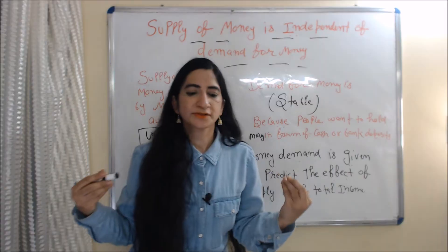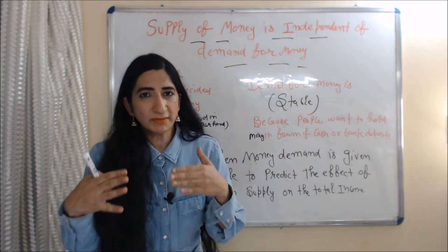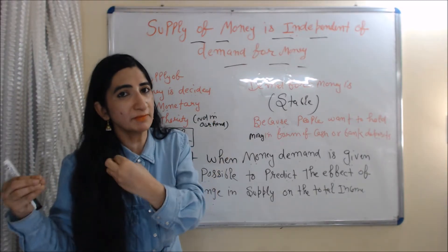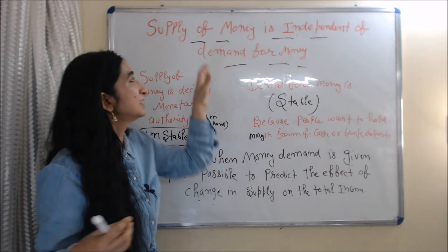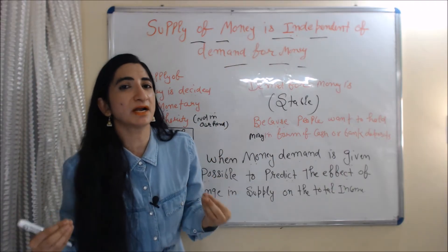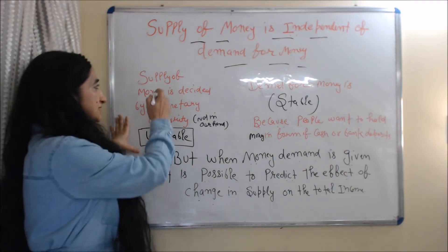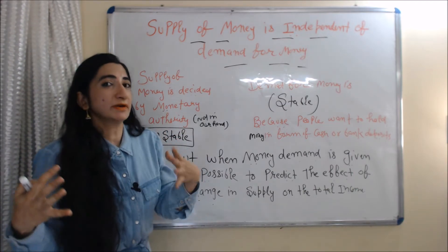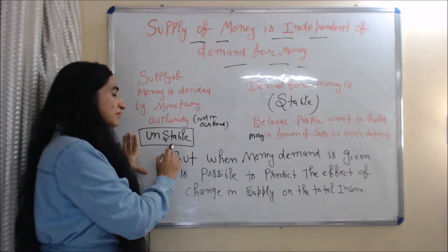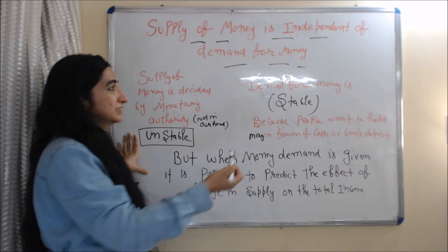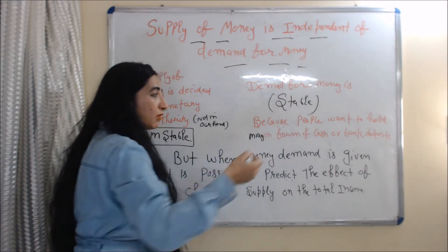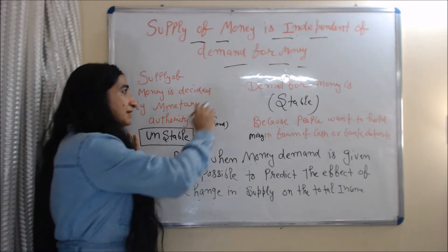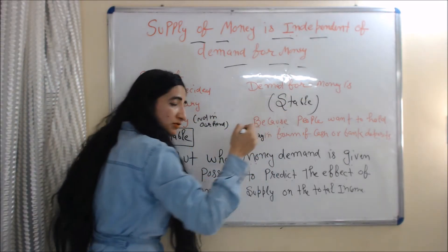According to Milton Friedman, supply of money is independent of demand for money because supply of money is decided by the monetary authority — it is not in our hands. That's why we can say supply of money is unstable. On the other hand, demand for money is stable because people want to hold money in the form of cash or bank deposits.